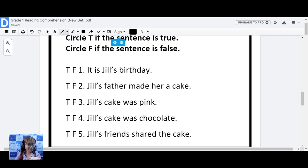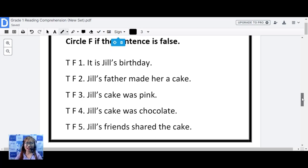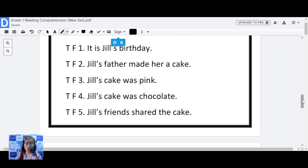Okay, what's your answer? Okay, let's try number two. Jill's father made her cake. Is it true or false? Okay, number three. Jill's cake was pink. Is it true or false? Number four. Jill's cake was chocolate. Is it true or false? And the last one, number five. Jill's friends shared the cake. Is it true or false?